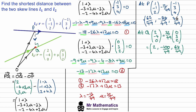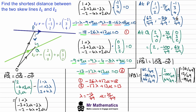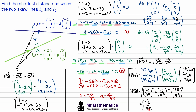Now we have P and Q, and we need to find the magnitude of the vector PQ. The magnitude of PQ equals the magnitude of (O to Q minus O to P), which we worked out earlier. Using the coordinates of P and Q, we get the direction vector for PQ, then apply Pythagoras — squaring the i, j, and k components and summing them. Working this out on a calculator gives the square root of 36/49, so the shortest distance is 6/7.